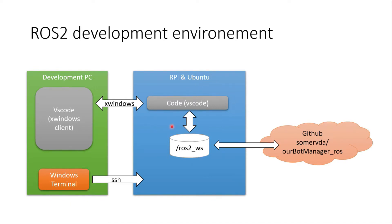The way I'm going to do that is use VS Code as my IDE. I've installed VS Code on the Raspberry Pi and also installed X Windows, so I can start up code under the ROS2 workspace directory and do all my coding through a VS Code X Windows client on my development PC. I also like to use Git and GitHub.